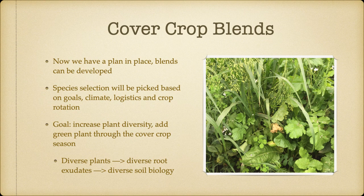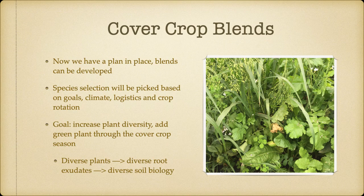Now we have that plan in place, we can start developing these plans. Species selection will be based on your goals, your climate, your logistics and crop rotation. At the end of the day, our main goal is to increase plant diversity and add a green vegetative plant growing throughout the whole growing season on that soil. When we have diverse plants, we increase the diversity of root exudates being released into the soil, which stimulates and fosters more diverse soil biology. When we have that diverse soil biology, we have resilience in our soils, and in turn resilience in our plants.